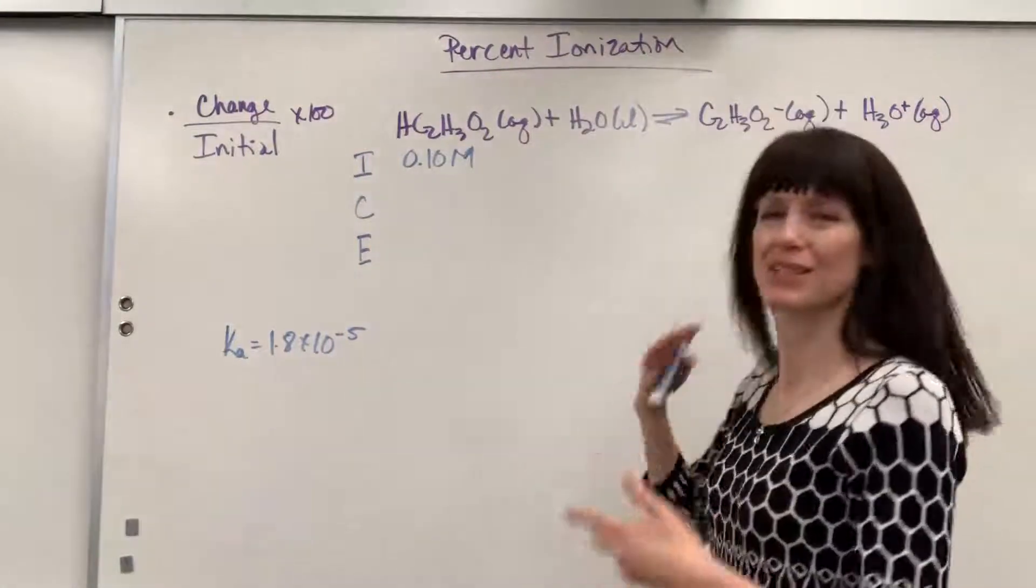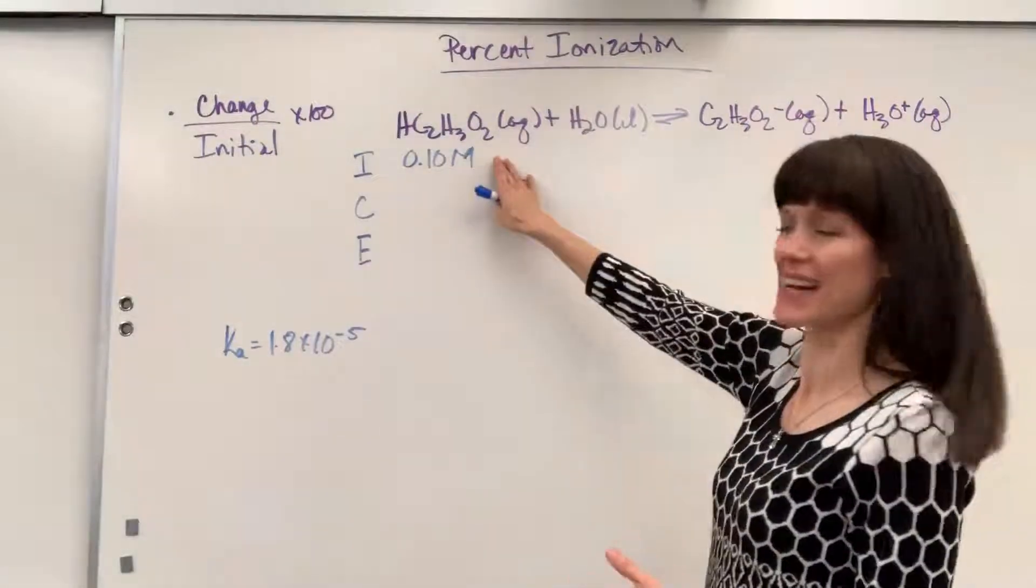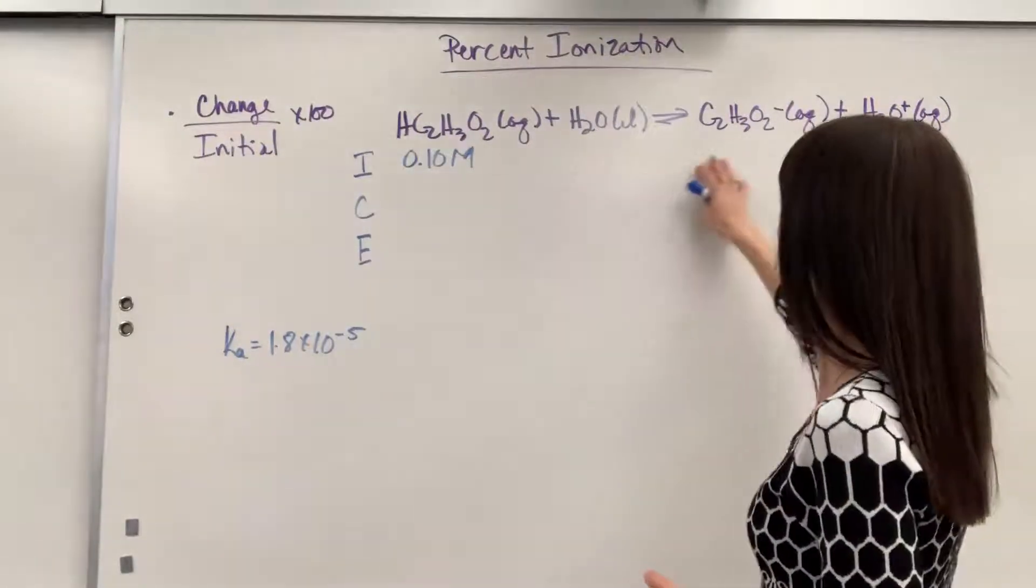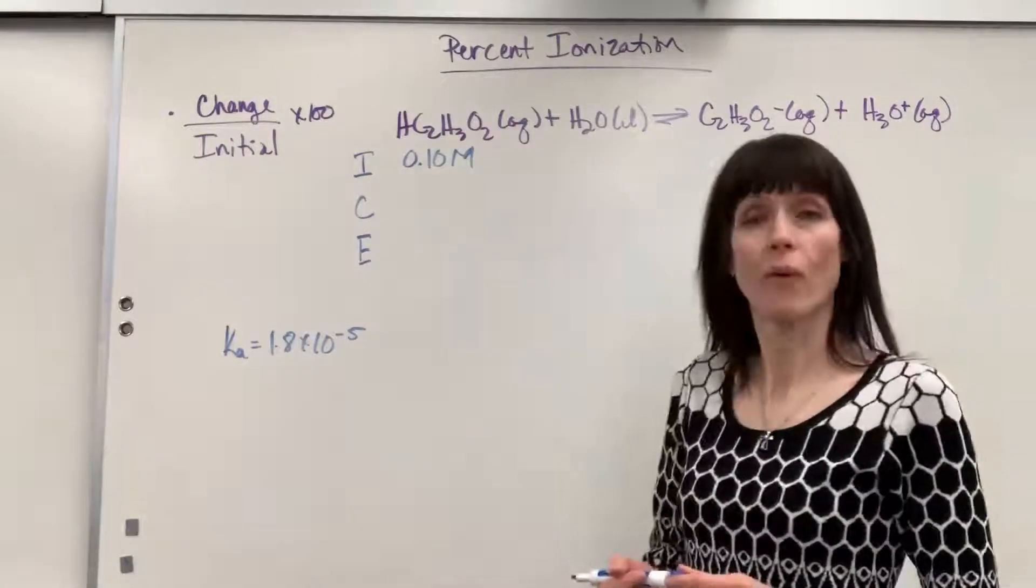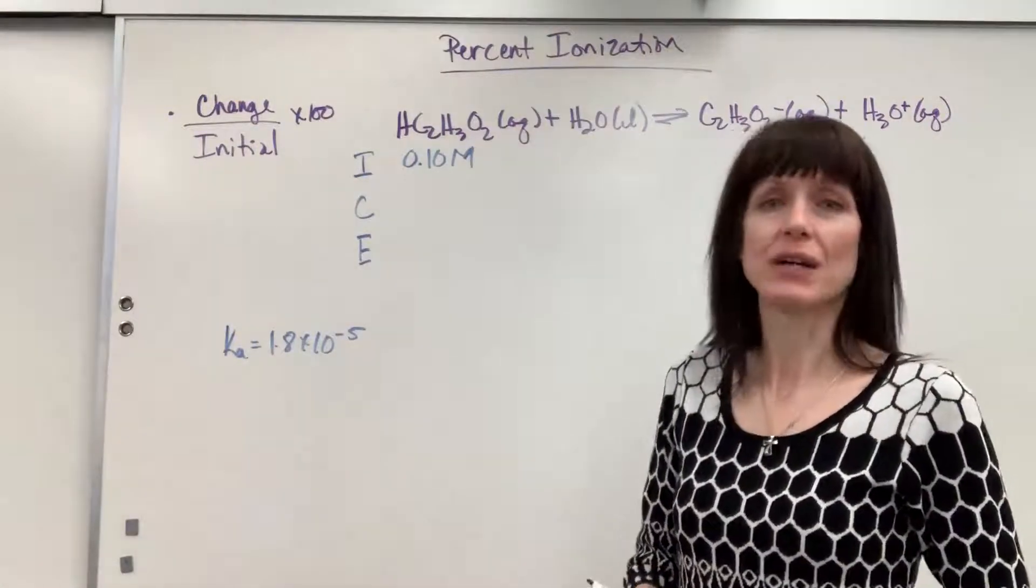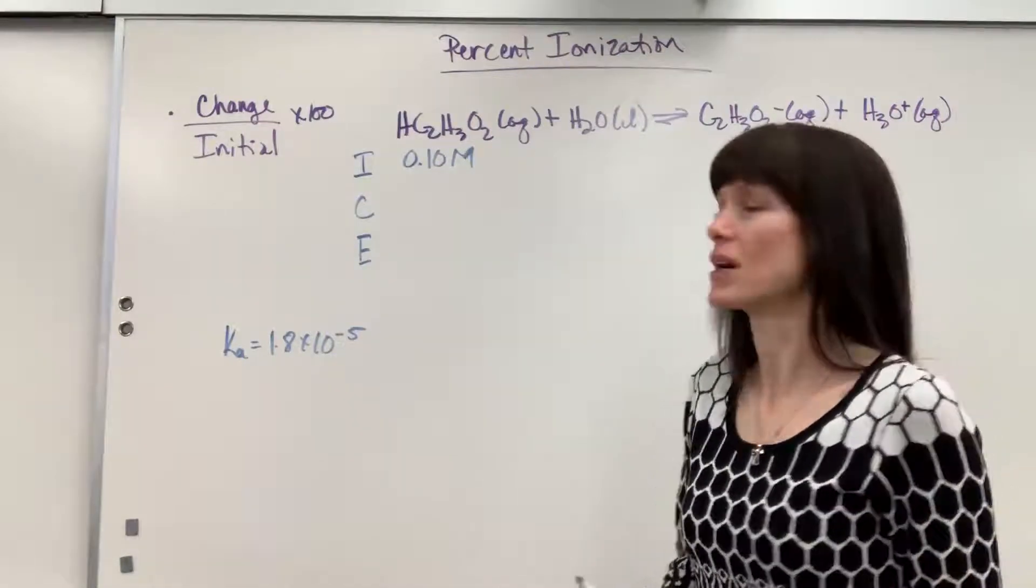In this situation we're going to do a very classic example, acetic acid, so vinegar. We're going to react that with water and it will produce acetate ion and the hydronium ion. We'll start with a 0.1 molar solution and we're going to figure out all the equilibrium concentrations.